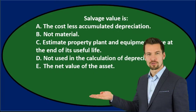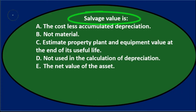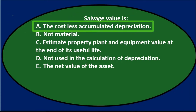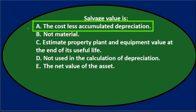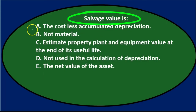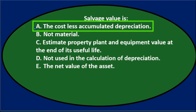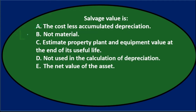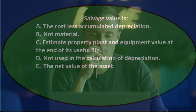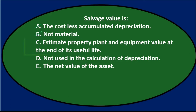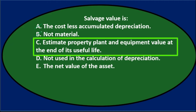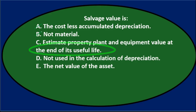We'll go through this again with the process of elimination. A says the cost less accumulated depreciation — that's the book value, and it wouldn't equal salvage value unless we were at the very end of the asset's useful life. So it's not A. B says not material, but that's not the definition of salvage value — it doesn't seem right. C says estimated property, plant, and equipment value at the end of its useful life, and that seems pretty reasonable. I'll keep that one.